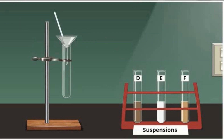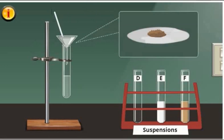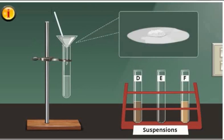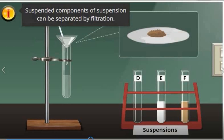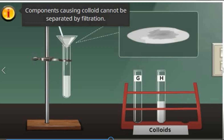Let us find out if the components of the suspensions are filterable. From mixture D, we retrieved a clear filtrate and the residue is soil. From mixture E, the residue is chalk while the filtrate is a clear liquid. From mixture F, the filtrate is a clear liquid and the residues are fine sand. The result showed that suspended components of suspension can be separated by filtration. From mixture G, we retrieved a white liquid with no residue at the filter paper — the same result from mixture H. This shows that components causing colloid cannot be separated by filtration.